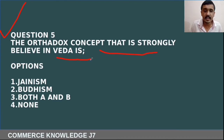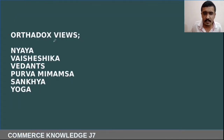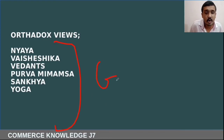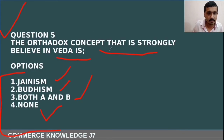The fifth and final question: the orthodox concept that strongly believes in the Veda — options are Jainism, Buddhism, both A and B, and none of these. What do we mean by orthodox views? Those who strongly believe in God and the Veda are called orthodox; those who do not are called heterodox.